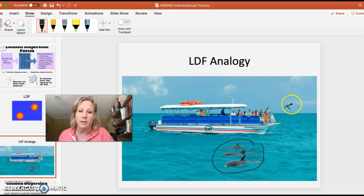The people in the analogy are the electrons. At any given moment there may be more electrons on one end of the molecule than the other, which creates a temporary dipole.